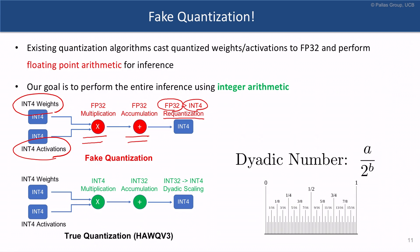Our approach in HawkWii3 is what we call true quantization, where the multiplication and accumulation is performed with integer arithmetic. In particular, the multiplication is happening in int-4 precision and the accumulation is happening in int-32.